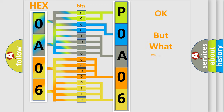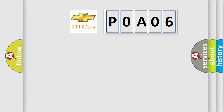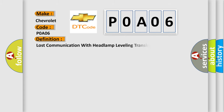The number itself does not make sense to us if we cannot assign information about what it actually expresses. So, what does the Diagnostic Trouble Code POA06 interpret specifically for Chevrolet car manufacturers? The basic definition is: Lost communication with headlamp leveling translator HIDT.